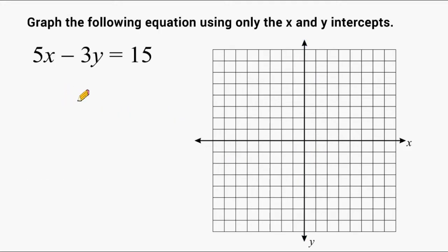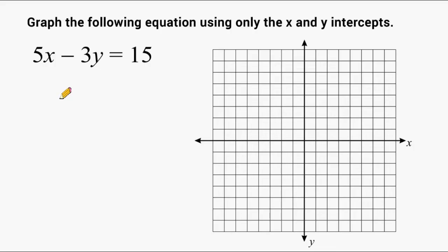Now that we know that the y-value is zero when finding the x-intercept, and we know that the x-value is going to be zero when finding the y-intercept, let's go ahead and use that information to figure out the coordinates of our x and our y-intercept of this equation, and then connect them together to form our line.